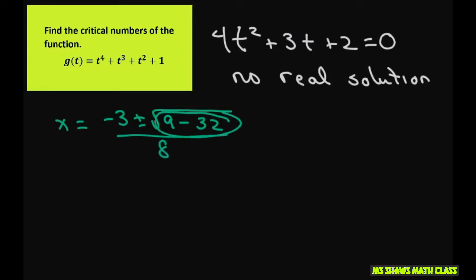Basically, since this is negative, there's no real solutions for this portion. We do have one critical value, which is t equals zero.